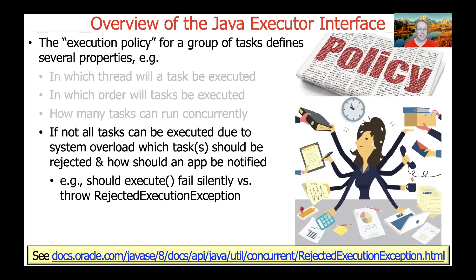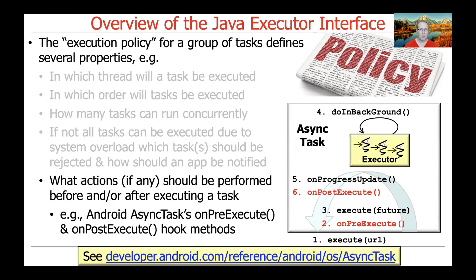Another very interesting question is: if not all tasks can be executed because you've got too much work for the system to keep up with, which tasks should be rejected and how should the application be notified? If you've got more work than you can juggle, eventually you'll have to start rejecting things — otherwise the whole system bogs down to a screeching halt. Should execute fail silently, or should an exception be thrown? If you want to be notified when the thread pool can't accept the next piece of work, you should set the rejected execution exception, which we'll talk about later.